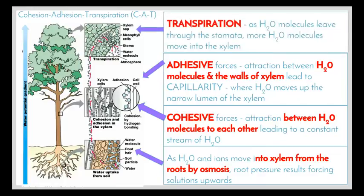Lastly, transpiration takes place in the leaves: water evaporates to the atmosphere, and as one water molecule leaves, there is room for another to come in. As multiple water molecules evaporate, more can enter the xylem and travel up the plant. These three processes work together to move water from the bottom to the top of the plant.